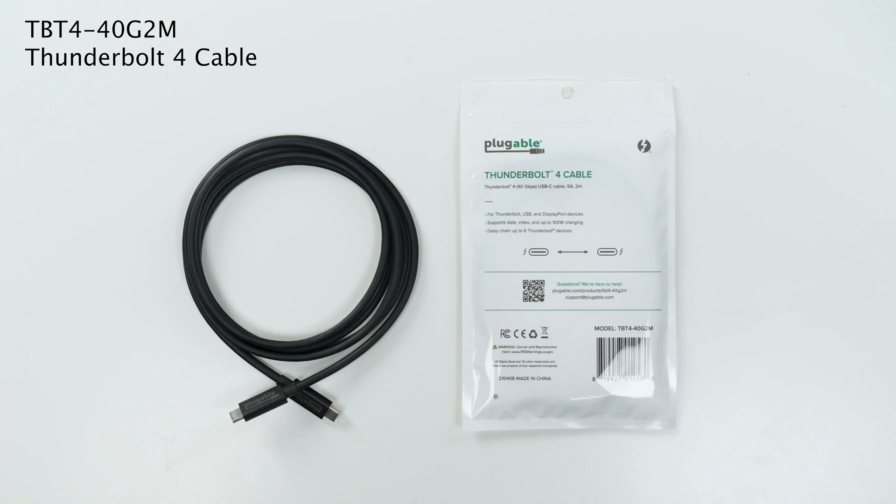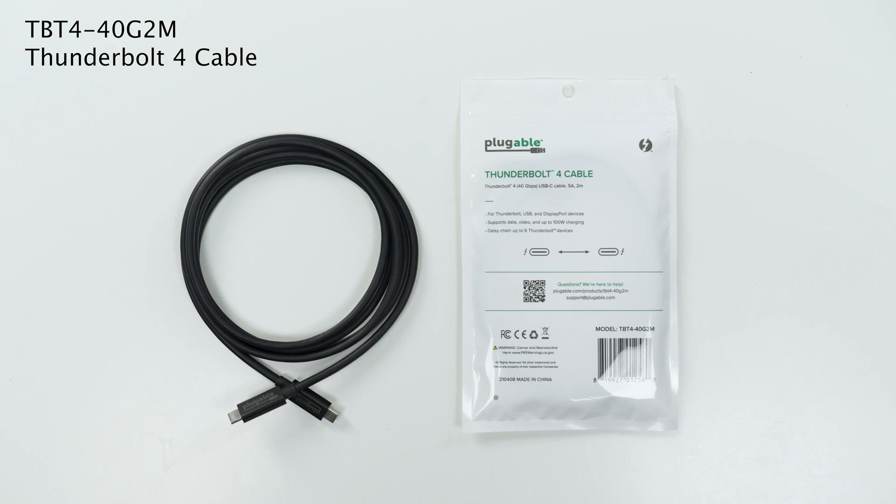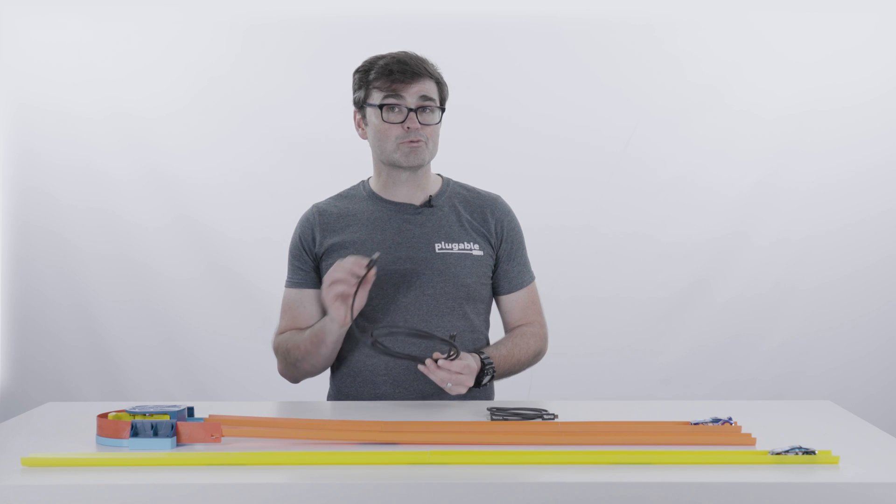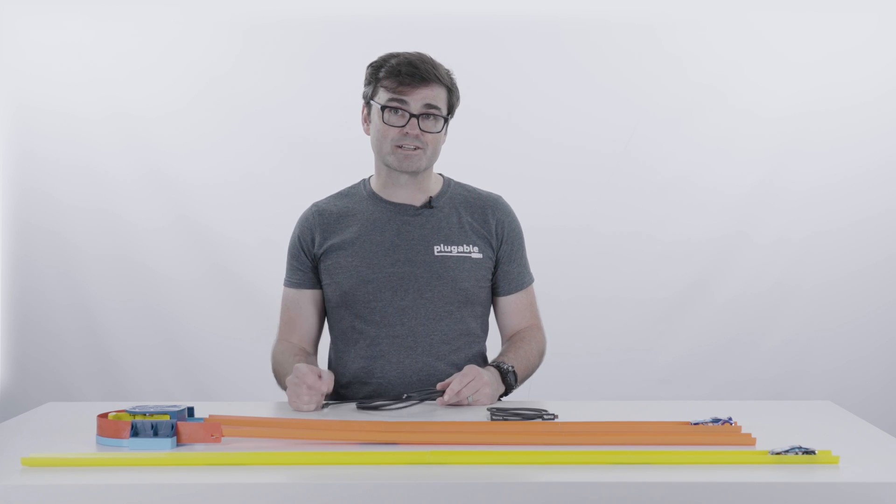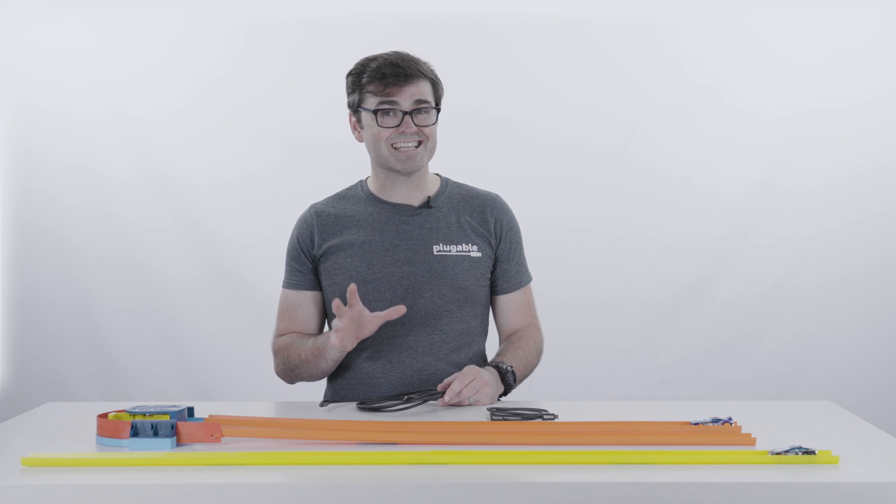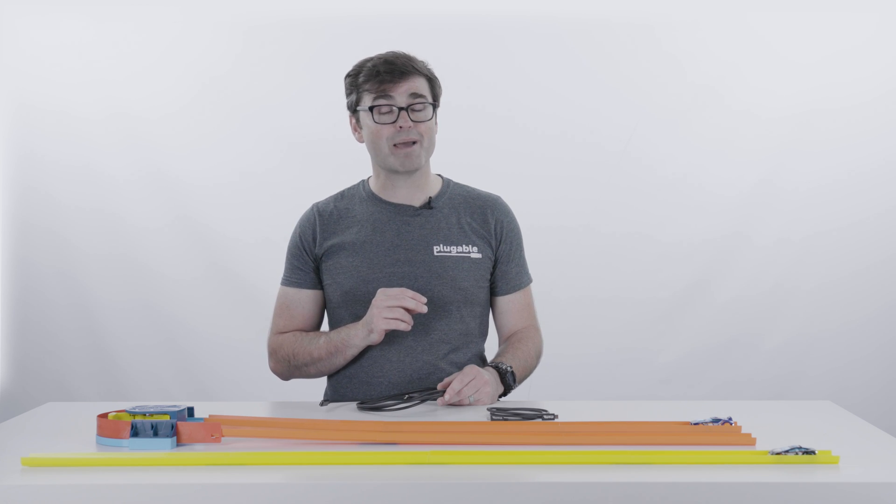The pluggable 2 meter active Thunderbolt 4 and USB 4 cable has specialized Intel chips known as retimers that boost that signal along your data path, increasing the distance it can travel. In this case, that's twice the distance of the passive equivalent.